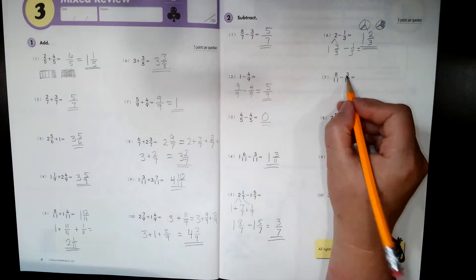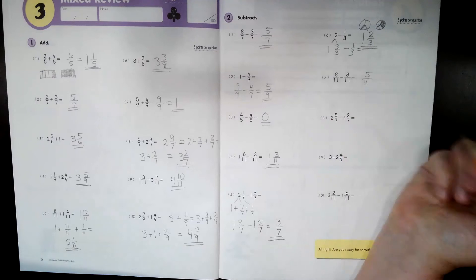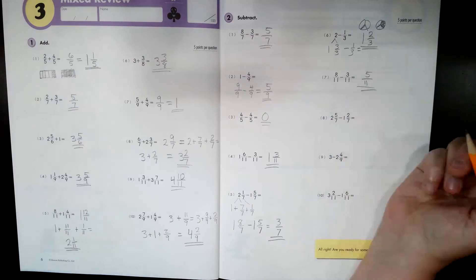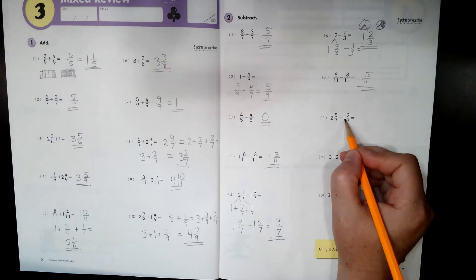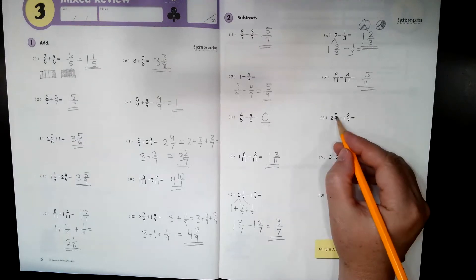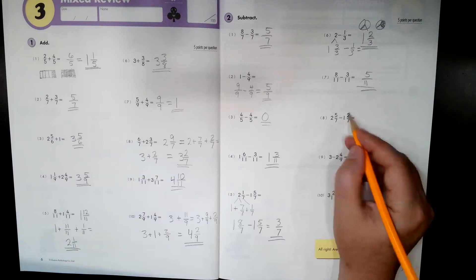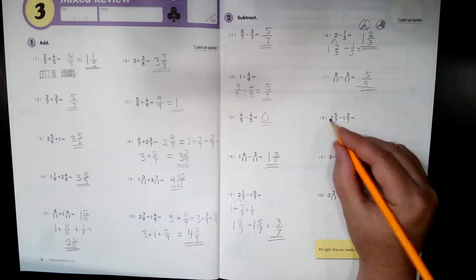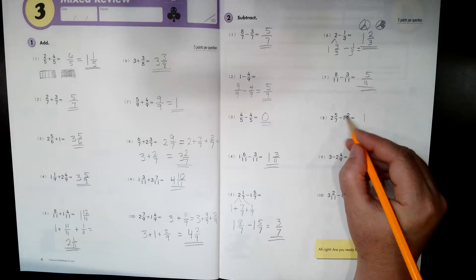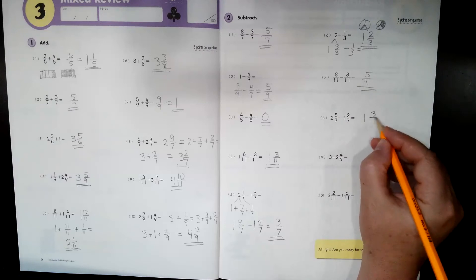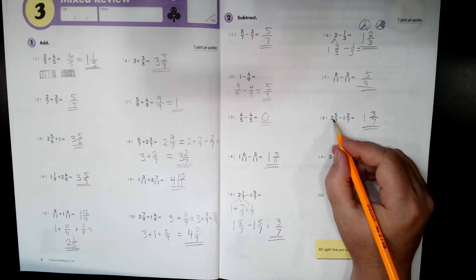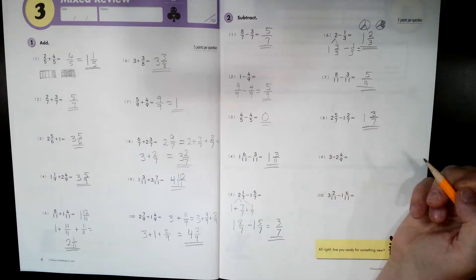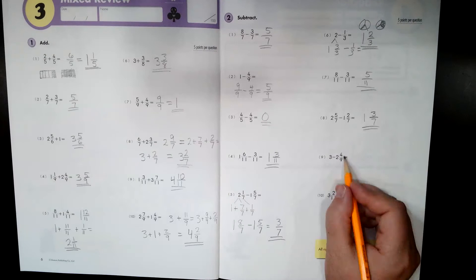This one's easy peasy. Eight minus three is five of 11 parts. How about this one? Feel pretty good about this one? Subtract the whole numbers. See, this number is bigger here. This number is bigger, so I don't have any converting to do. So I can just subtract my whole numbers, subtract my numerators over my denominator. So I have one and three of seven parts left.